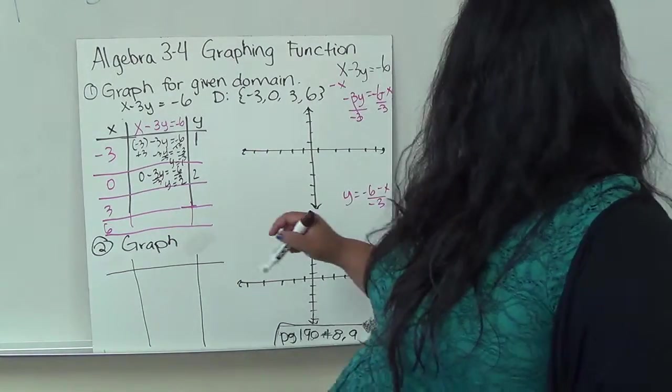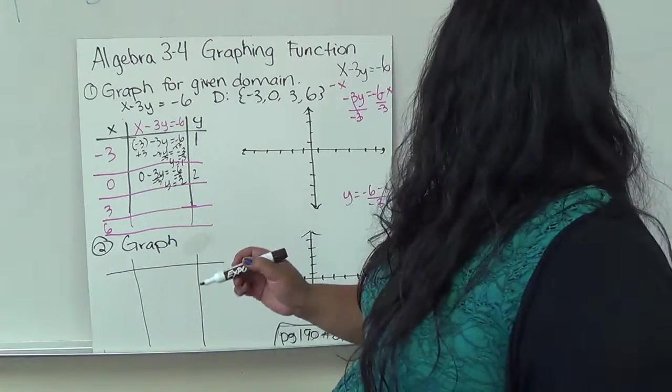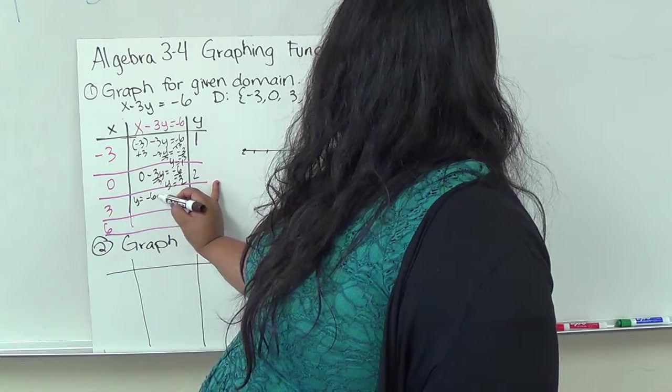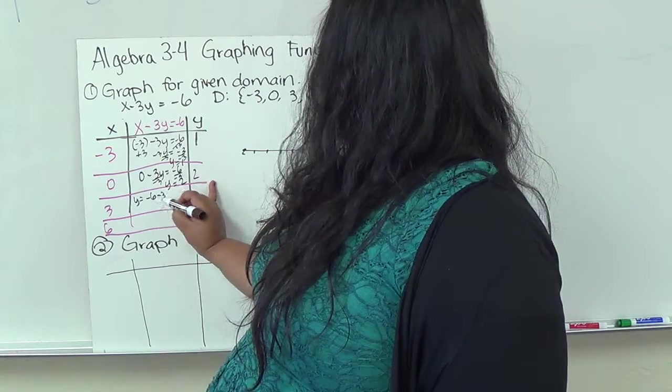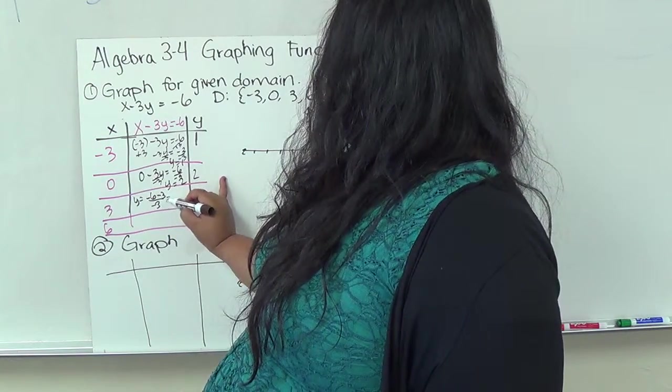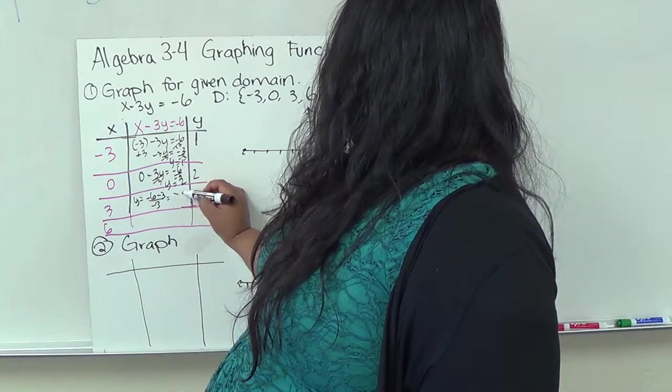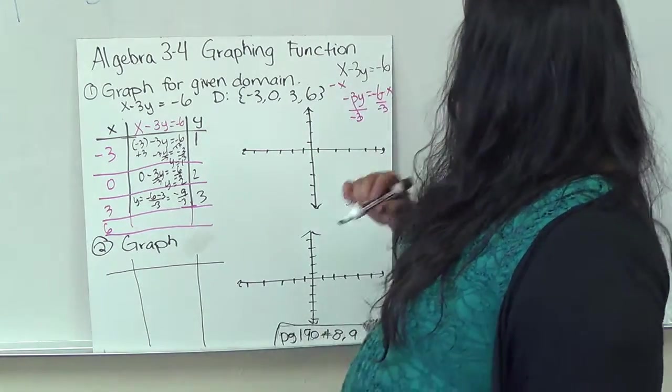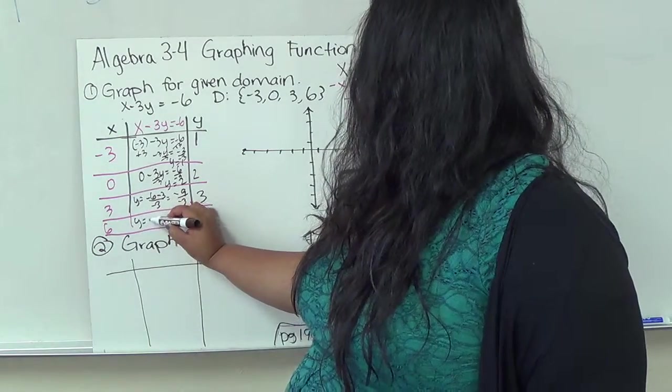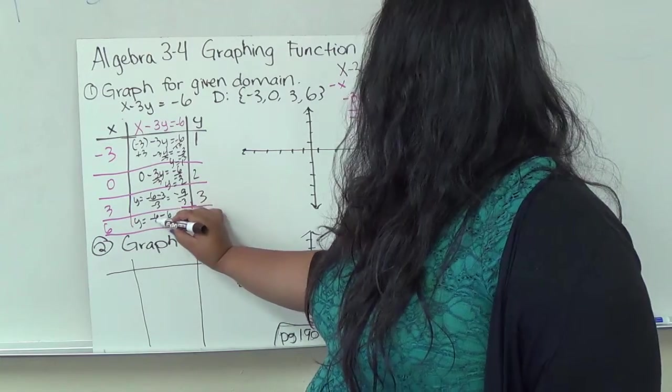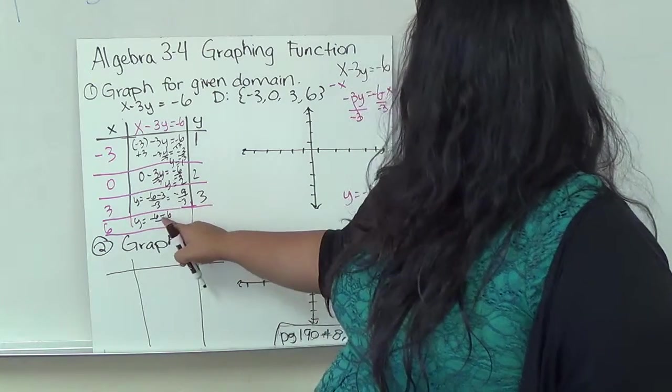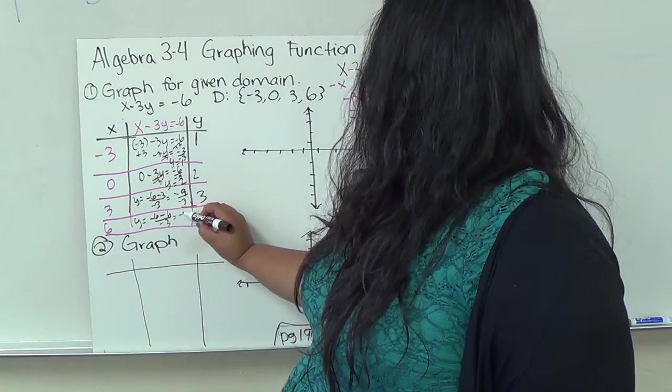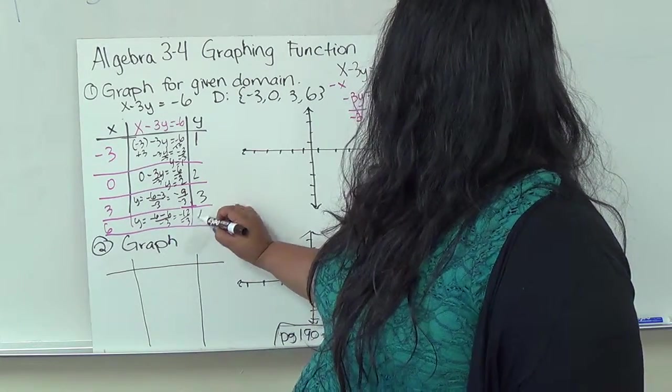So let's try this one, just so you can see which one you would prefer. So I do y equals negative 6 minus x, x is 3 over negative 3. So negative 6 minus negative 3 is negative 9 over negative 3. This gives me a positive 3. The next one is y equals negative 6 minus positive 6, over negative 3. This gives me negative 12 over negative 3, giving me positive 4.